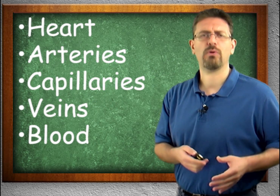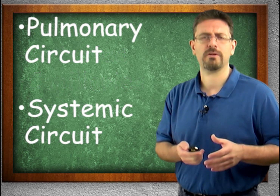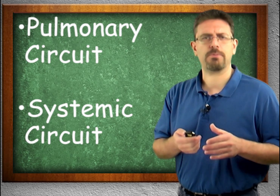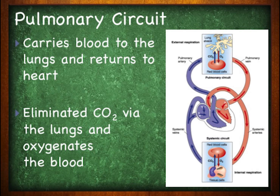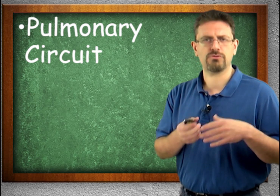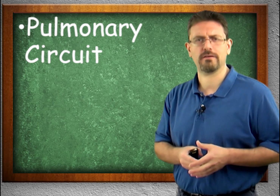We have two primary divisions within the cardiovascular system: the pulmonary circuit and the systemic circuit. The pulmonary circuit carries blood to the lungs and returns it to the heart. It eliminates CO2 (carbon dioxide) via the lungs and oxygenates the blood. So this circuit goes from the heart to the lungs and brings it back — that is the pulmonary circuit.